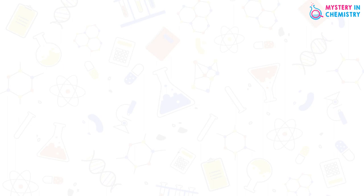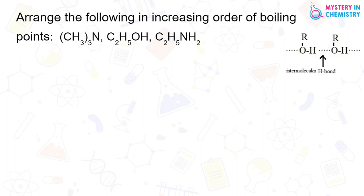Arrange the following in increasing order of their boiling points: trimethylamine (CH₃)₃N, ethanol C₂H₅OH, and ethylamine C₂H₅NH₂. You know that hydrogen bonding depends - hydrogen bonding can decide the boiling point of any molecule.